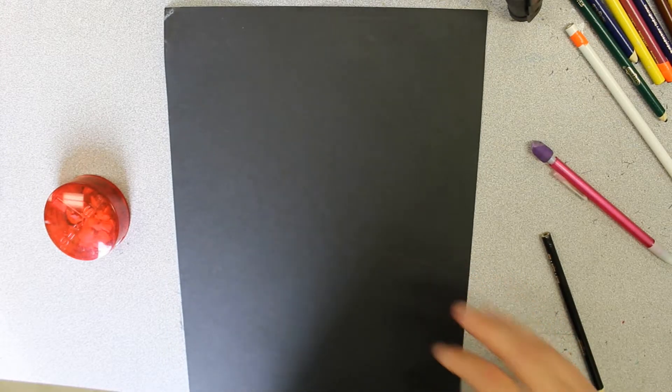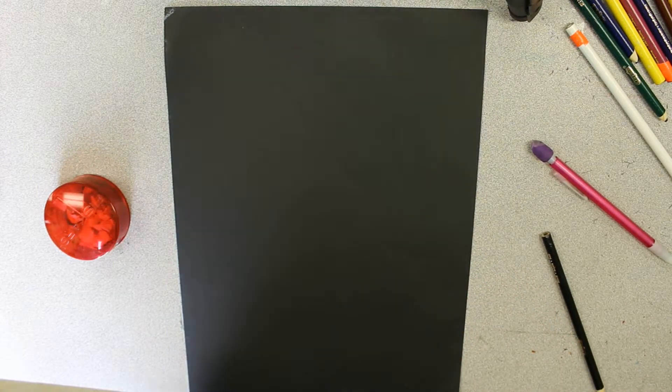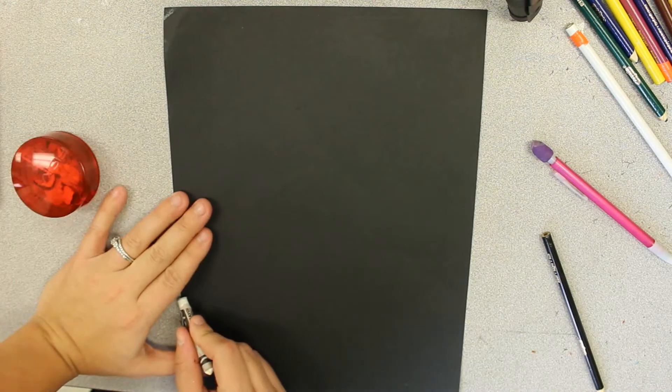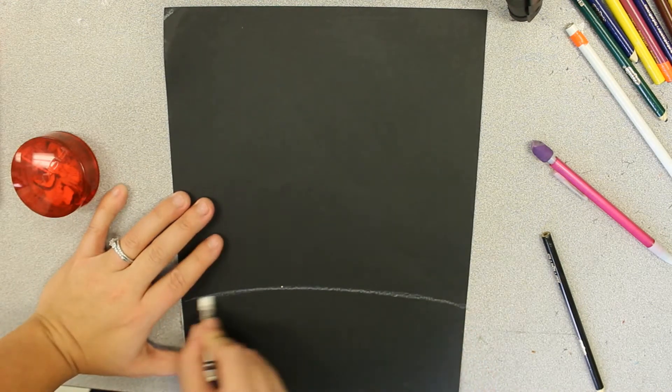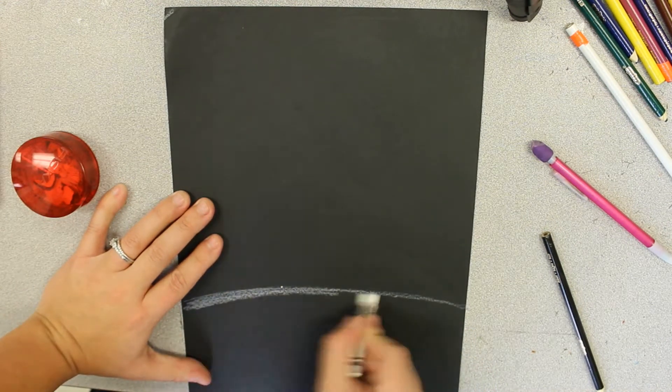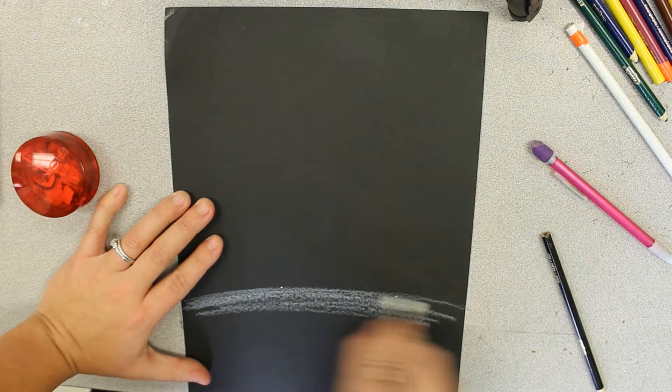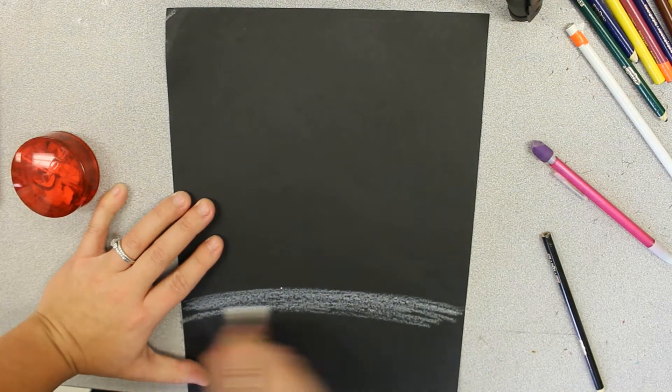Now we're going to start making our background. For our background we're going to be using a black piece of paper. Grab a black piece of paper if you have one, otherwise you can just draw your winter scene on a white piece of paper.